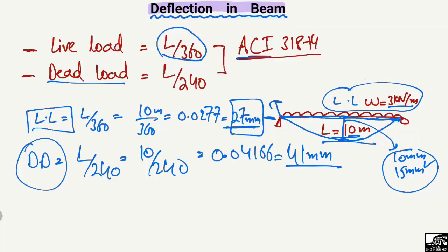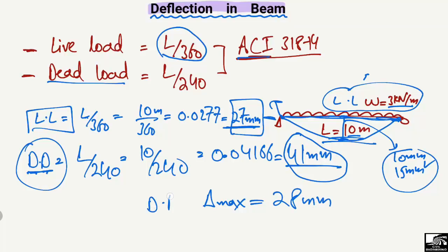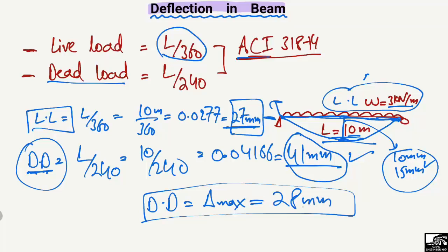To find the dead load, multiply the density of the material by the cross-section of the beam. The deflection due to dead load should be less than 41 millimeters. For example, if the maximum dead load deflection is 28 millimeters, that is acceptable since our limit is 41 millimeters.